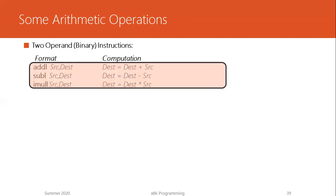These are some of the instructions that perform arithmetic operations, and remember the LEA instruction too can be used for evaluating arithmetic expressions. Now we turn to logical operations. First, we look at shift instructions. SHLL, also called SALL — shift arithmetic left — takes the destination value and shifts it left by the amount in the source operand and stores it back into the destination register.